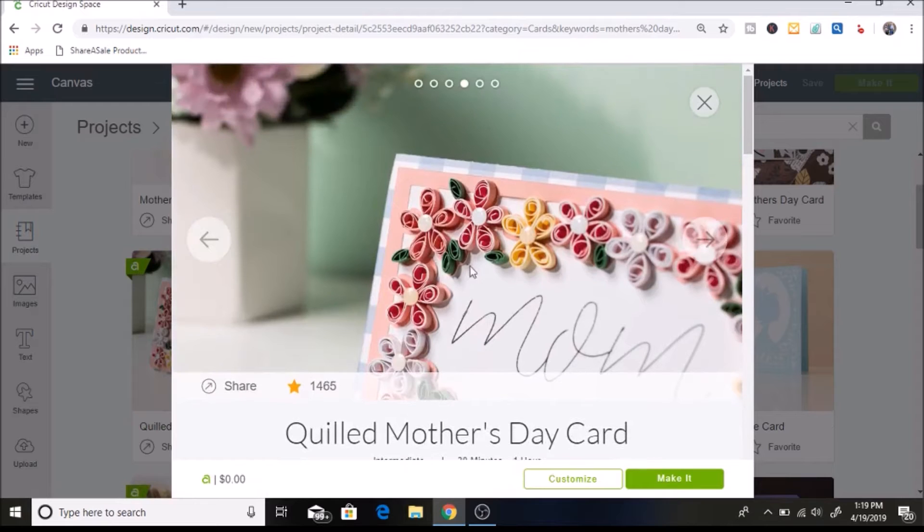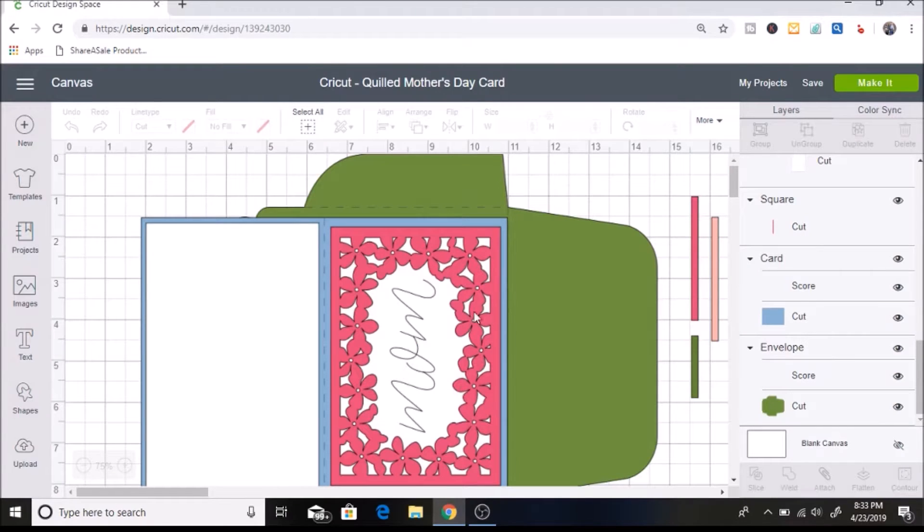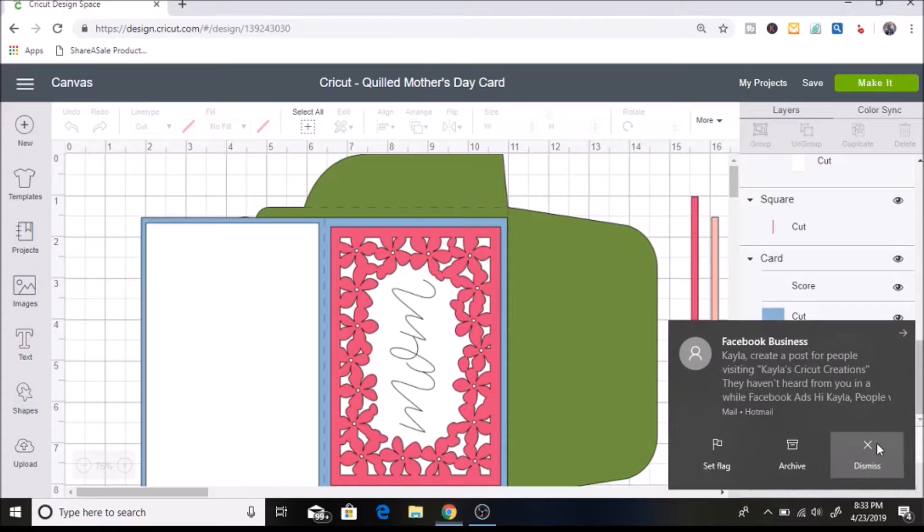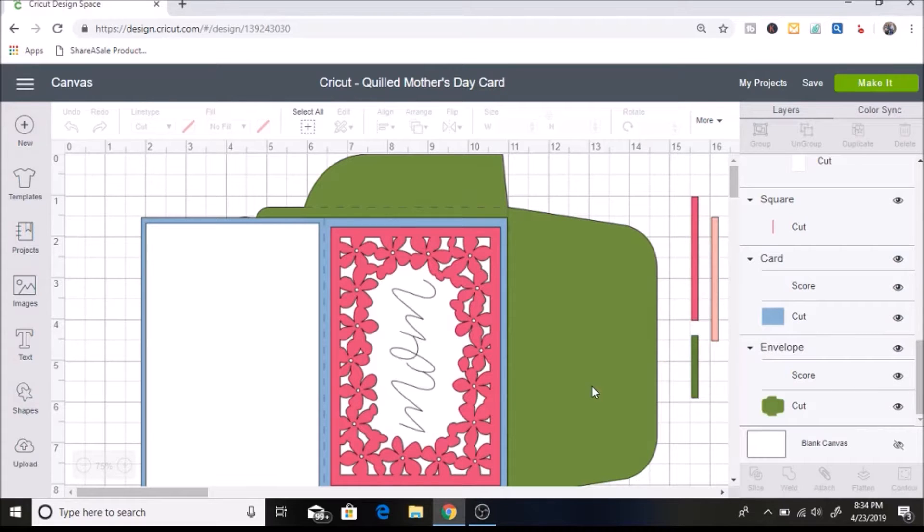So then with this project, you can go ahead and click make it or you can go and customize, which is what I am going to do. So here's my card and I want to customize this a little bit. And what I want to do is I want to make each piece whatever color I am making it. And this helps me so much by visualizing what I'm doing and it'll separate it on each mat.